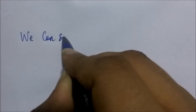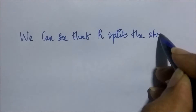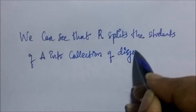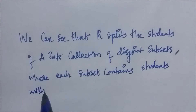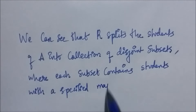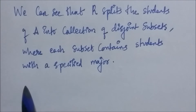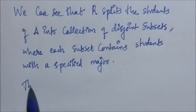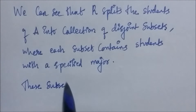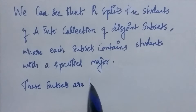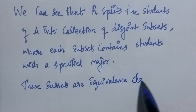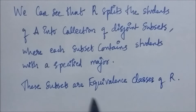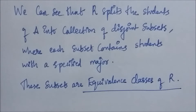Here we can see that the relation R splits all students in the set A into a collection of disjoint subsets, where each subset contains students with a specified major. For instance, one subset contains all students majoring in computer science, a second subset contains all students majoring in history, and so on. These subsets are nothing but the equivalence classes of the relation R. This illustrates how equivalence classes of an equivalence relation partition a set into disjoint non-empty subsets.